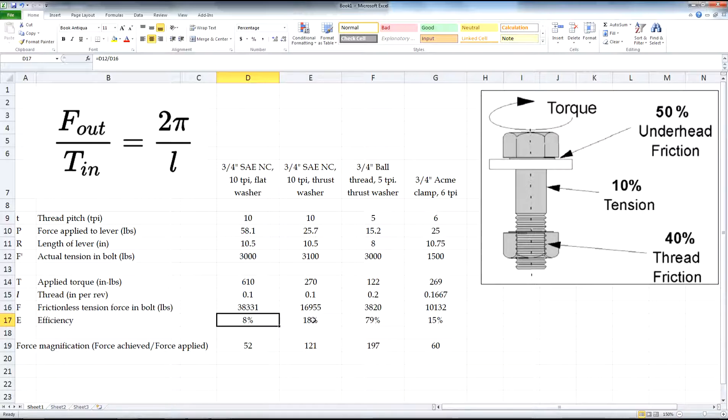Perhaps I have pretty dirty threads. I could have cleaned the threads. Next, we have the ball thread, which should be very close to frictionless. We have both the ball thread and the thrust washer. We got basically 80% efficiency, which is pretty good, I think. Some losses in the thrust bearing. I think the ball thread is about 85% efficient. And, we probably lost another 5% or so in the thrust bearing.